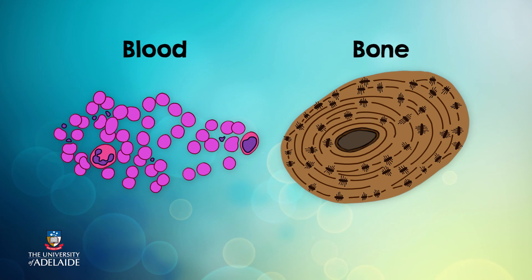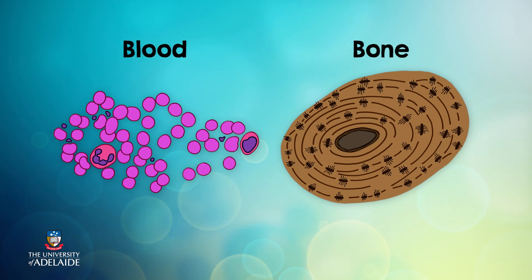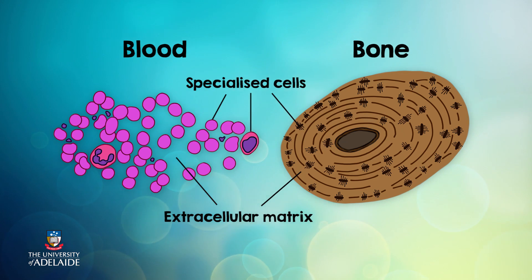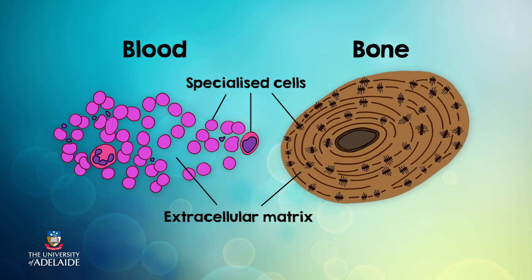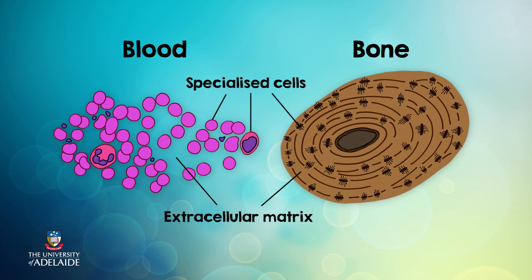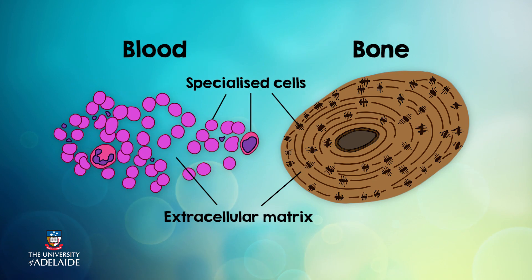It takes students quite some time to get their heads around the fact that blood and bone are forms of connective tissue. But if we look at both of these closely we can see why. They are made up of specialised cells, and secondly they have an abundant extracellular matrix — these are the two main characteristics of all connective tissue types. In the case of blood it's a more fluid matrix, and with bone it's a calcified and hardened matrix, so they fit the characteristics of connective tissue.